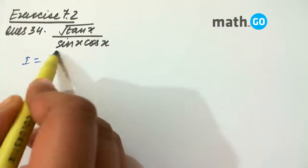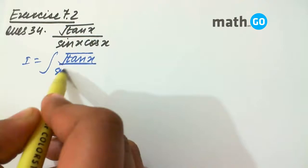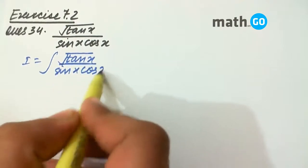How is it? We have i equals to root of tan x upon sin x into cos x into dx.